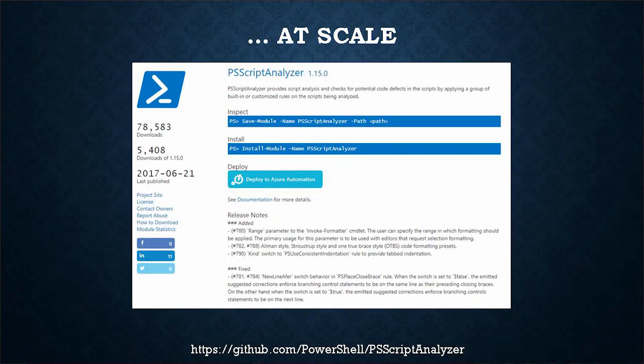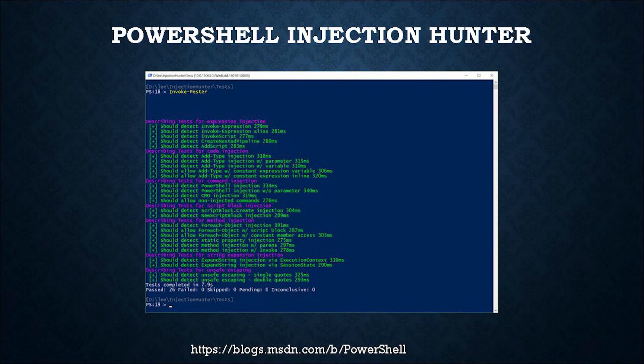You also have the ability to scan your scripts or environment at scale. There are available gallery objects that can be used for scanning script repositories, scanning code, running this in real time against the environment. Looking at injection hunter-type tools, the ability to scan that repository and tell you line by line where something is obfuscated or malicious — something almost impossible to do from a human eye level — lets you run this against entire repositories in your environment.